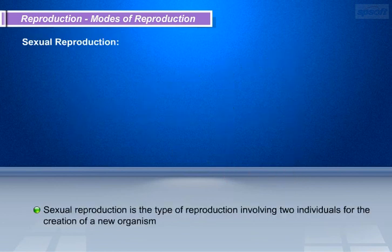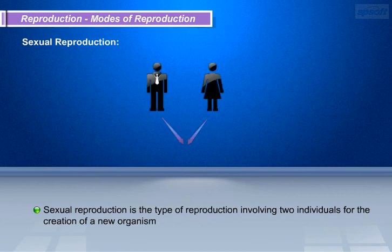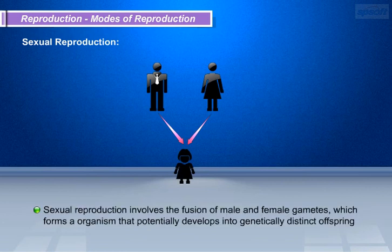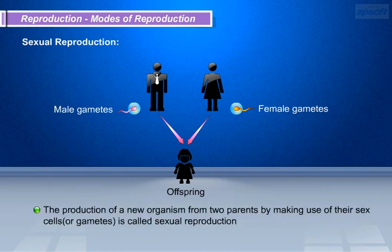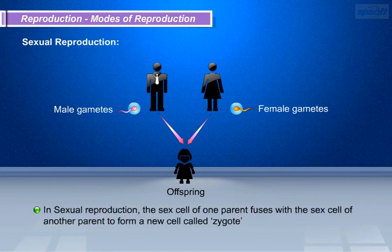Sexual reproduction is the type of reproduction involving two individuals for the creation of a new organism. Sexual reproduction involves the fusion of male and female gametes, which forms an organism that potentially develops into genetically distinct offspring. In other words, the production of a new organism from two parents by making use of their sex cells or gametes is called sexual reproduction. The sex cell of one parent fuses with the sex cell of another parent to form a new cell called a zygote.